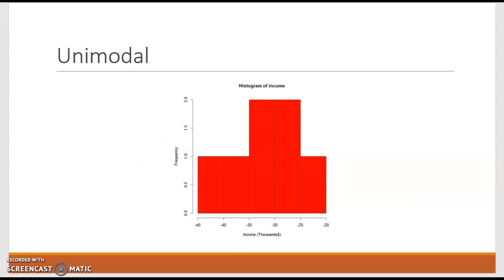So we have things that are called unimodal. So just pointing out the uni—uni means one. So we're talking about there's one high point. Everything else is below that. So because one high point, it's called unimodal.